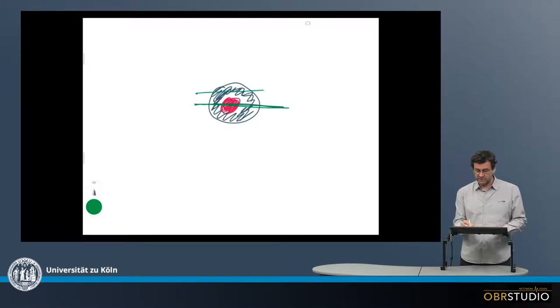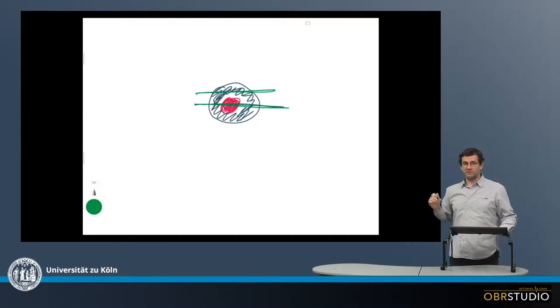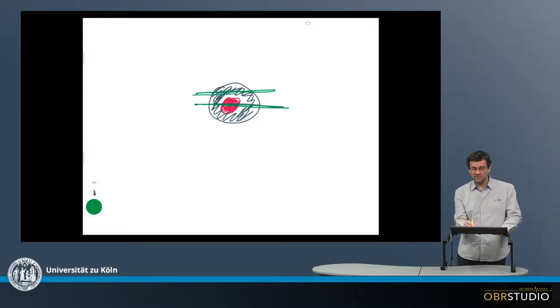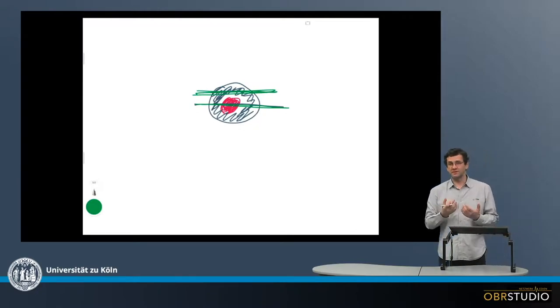However, when we cut the chondrule here, we will only see maybe a pyroxene chondrule or something like this, but not a zoned chondrule. So when we look at 2D and we section a chondrule here, we will not identify it as a zoned chondrule. So if we count these in 2D we will make a certain error.